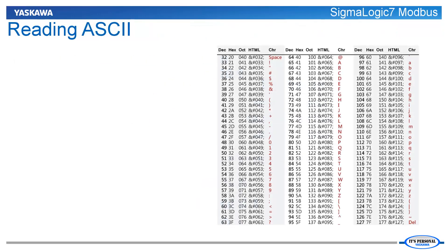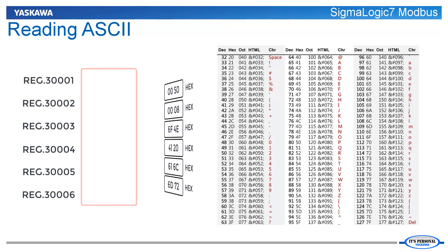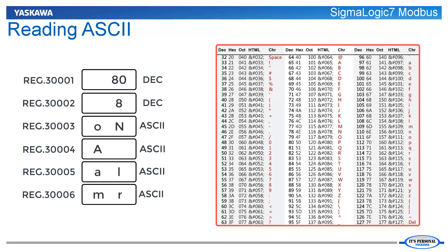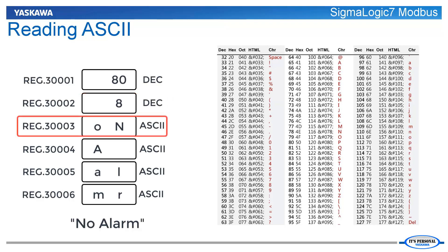The Sigma Logic 7 Modbus alarms are transferred as ASCII data starting at input register 300001. Each ASCII character is represented by a byte of information, so two characters will be placed in each Modbus register. The user will need to employ an ASCII lookup table to convert each character and then concatenate them into a complete string. There are many free ASCII tables available in the public domain to help with this conversion. The length of the alarm string can be found at register 300002, and the characters begin at register 300003.